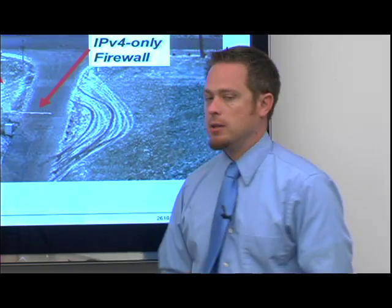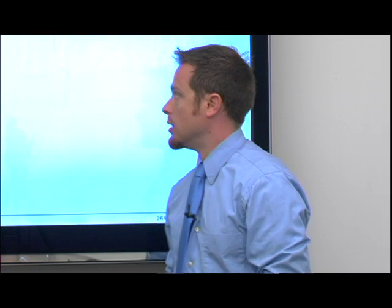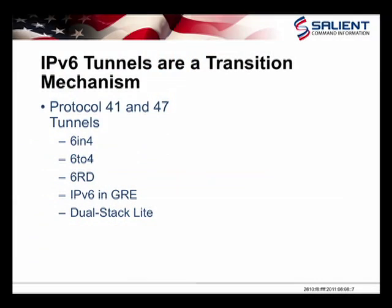The second example I wanted to talk about was IPv6 tunnels. A good analogy is having a gate on a road with traffic going around it — our security infrastructure isn't really ready for IPv6 tunneling. It's a transition mechanism, and some things to watch out for are protocol 41 and 47 tunnels, 6-in-4, 6-to-4, 6RD, IPv6 and GRE, and dual-stack lite.